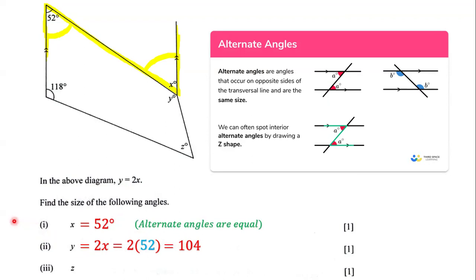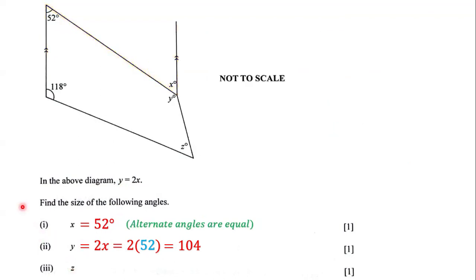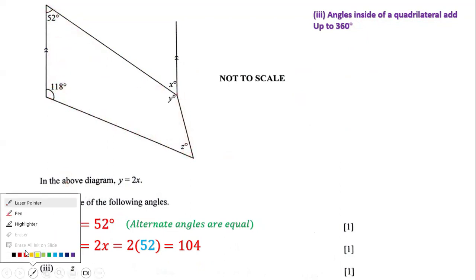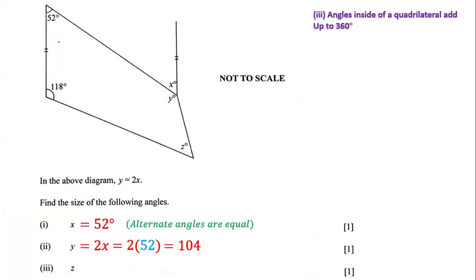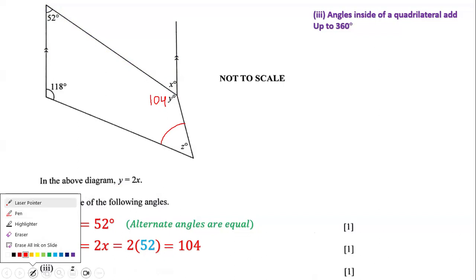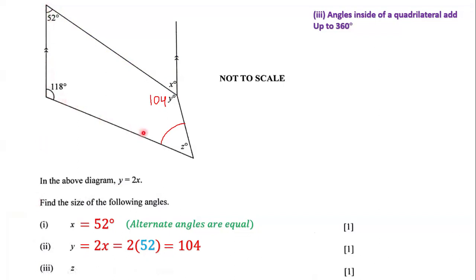Next, we need to determine the size of angle z. In order to do that, we're going to note that angles inside of a quadrilateral add up to 360 degrees. Here we have this quadrilateral — a quadrilateral is a shape that has four sides. We already know that this angle is 52, this is 118, and y is 104 degrees. The only thing we need to figure out is the size of angle z. Since this is a quadrilateral, its interior angles add up to 360 degrees. So 104 plus 52 plus 118 plus z equals 360 degrees.